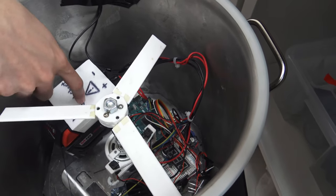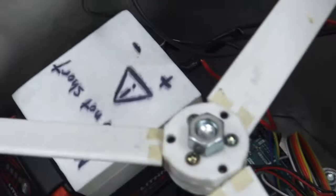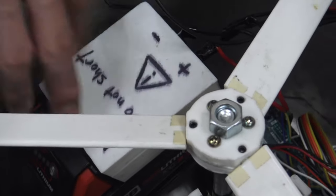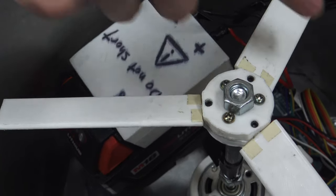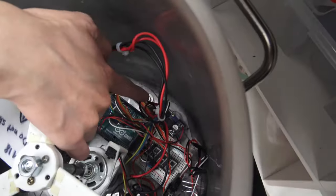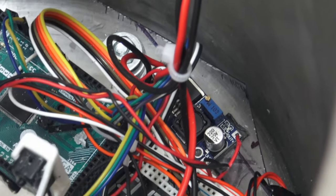And in here we essentially have a system that will keep the angular velocity of the blade at exactly what we desire. So here we have a battery pack, it's a drill battery pack, it's like 18 volts. We just printed a block for it and then that powers our whole system.